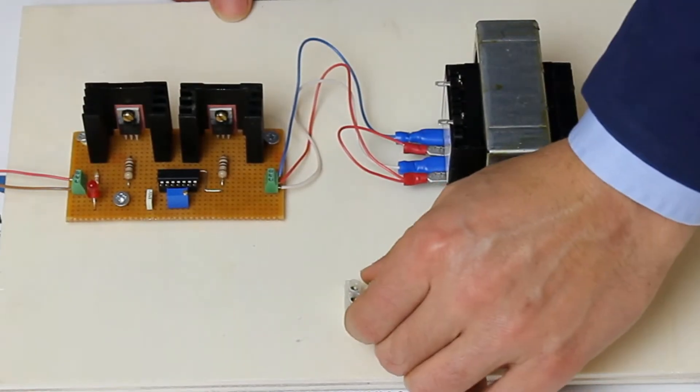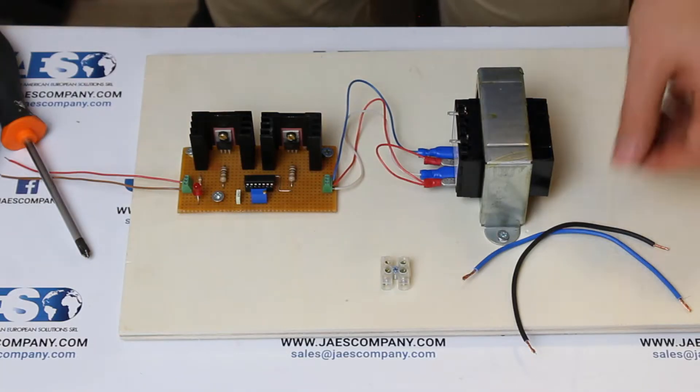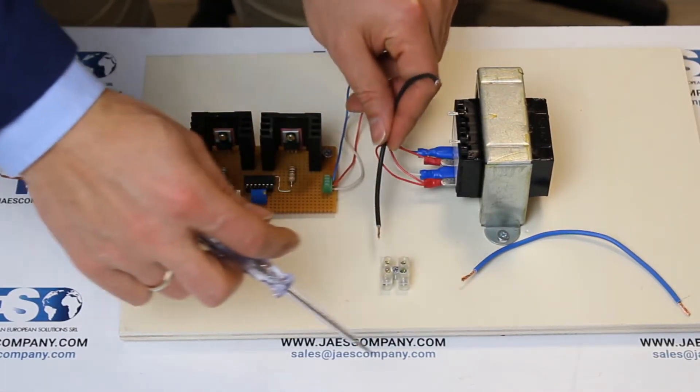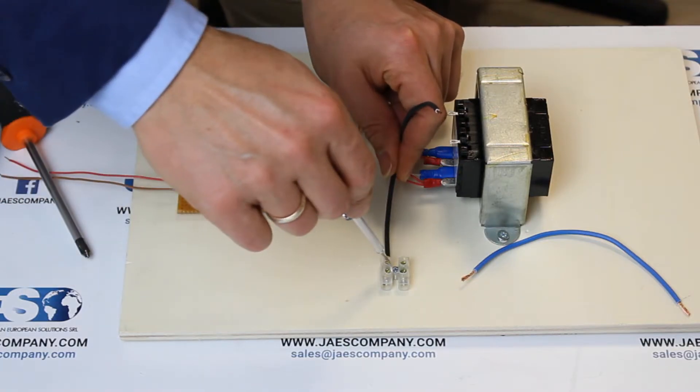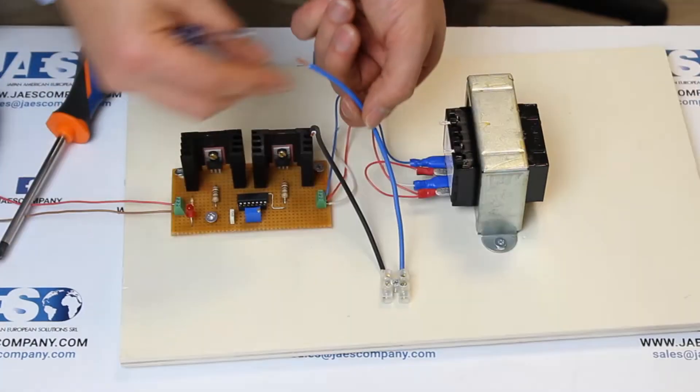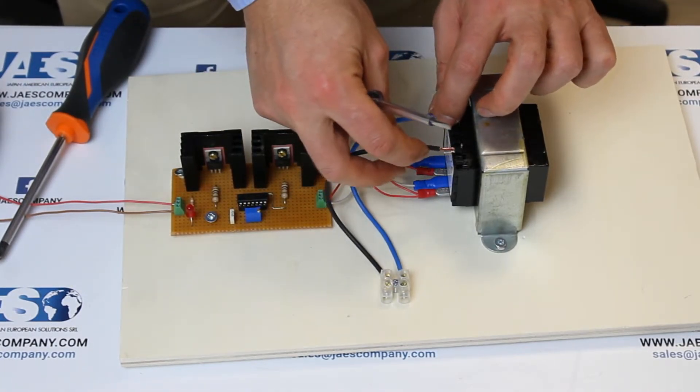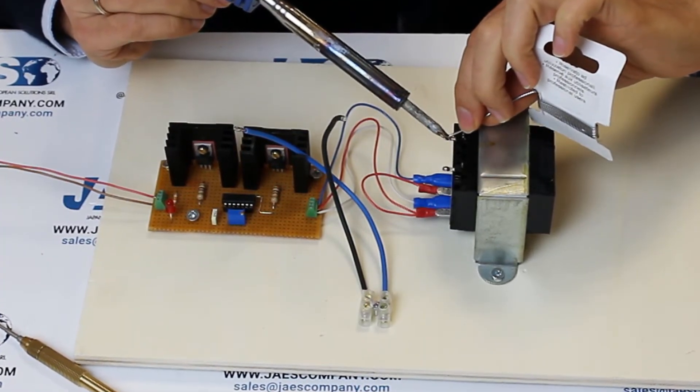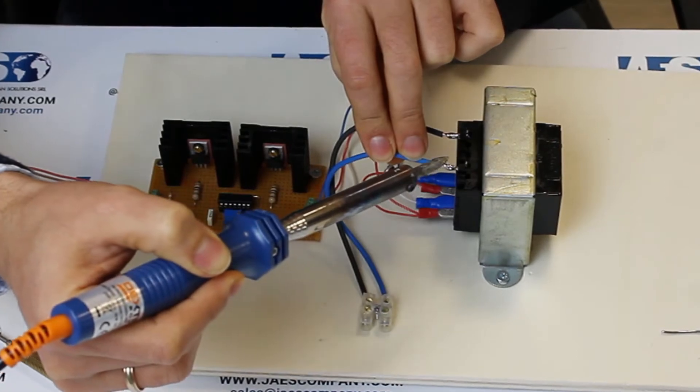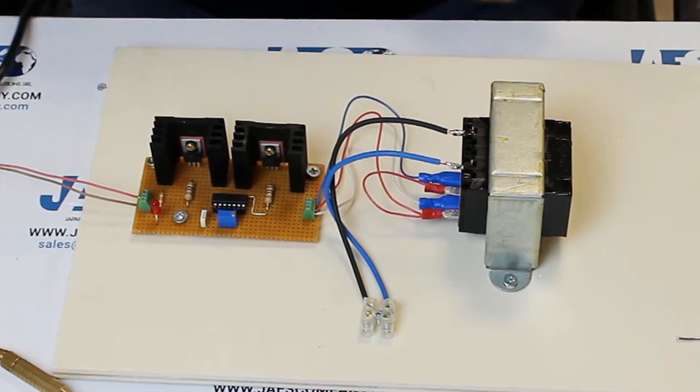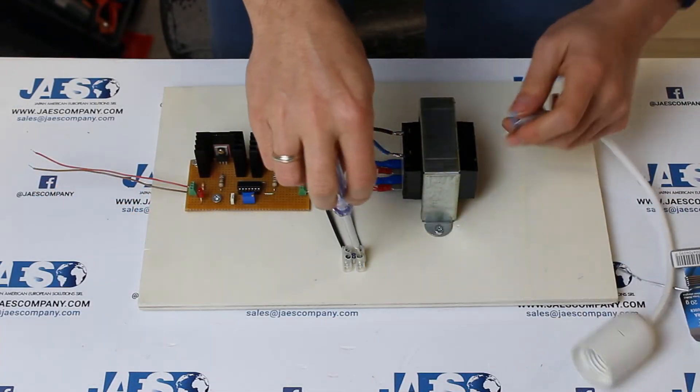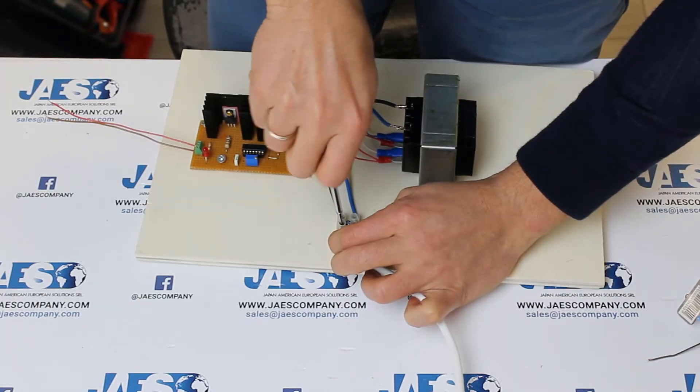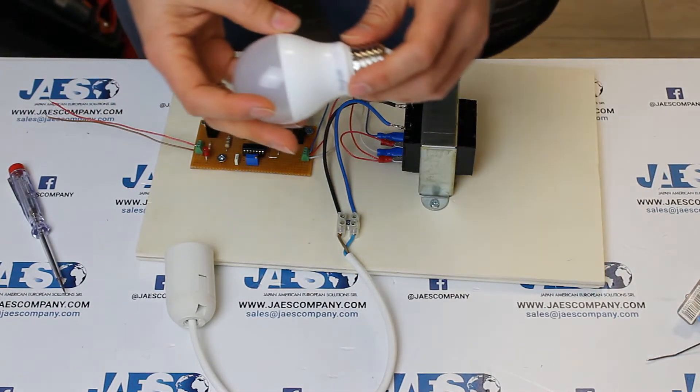Next step, we fix a clamp on the wooden base in which we will insert the cables that we are going to weld on the output of the transformer in this way. Now we connect the lamp holder cable to the terminal and we insert the bulb.